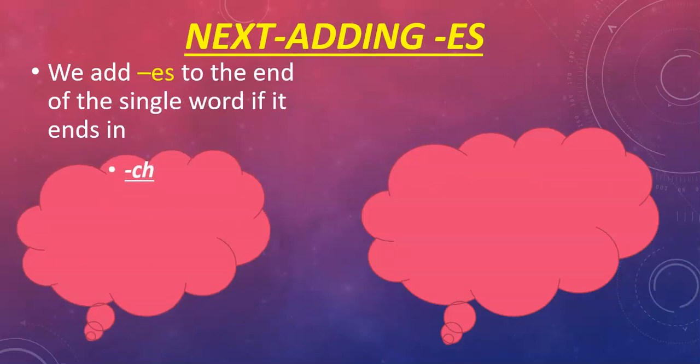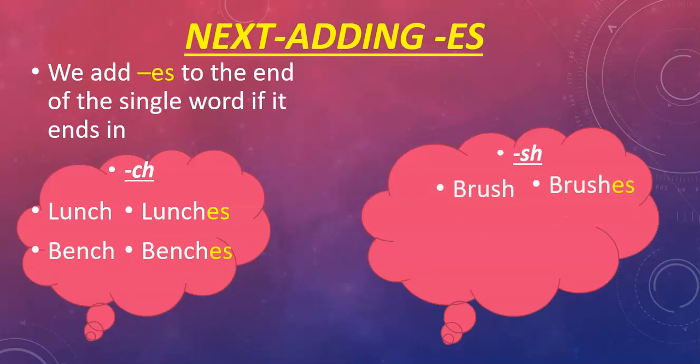We also add e s when a word ends in ch. So for example, lunch becomes lunches. Bench becomes benches. So any words that end in ch. Oh, that's a mistake there, isn't it? Oh well. Carry on.